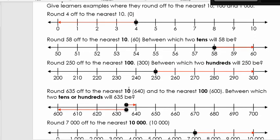Let's look at the next question. Round 250 off to the nearest 100. So the first thing that I ask myself is between which 200s will 250 be? So the 200s will be 200 and 300. So 250 will then go to 300. If we round it off, it will be to 300.